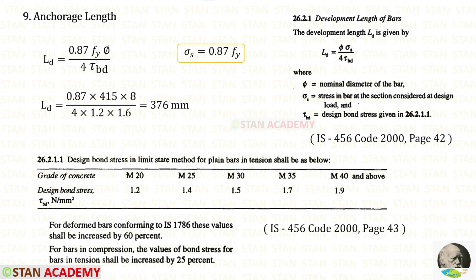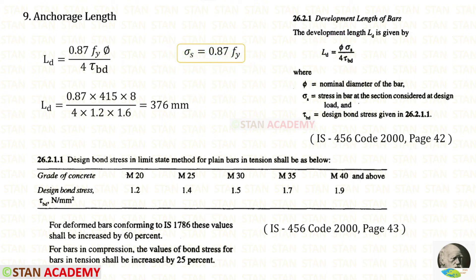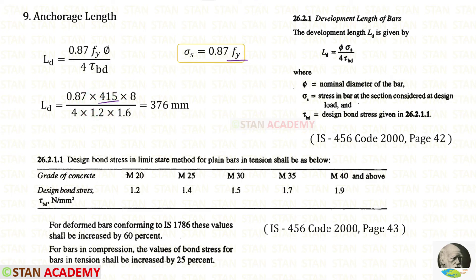Now let us design the anchorage length. From page number 42, we can copy the formula. In the case of high deformed bars, for sigma s we keep 0.87 fy. From page number 43, for M20 the design bond stress is 1.2. But for deformed bars it can be increased by 60%, so tau_bd will be 1.2 into 1.6. With fy equal to 415, the anchorage length will be 376 millimeter.